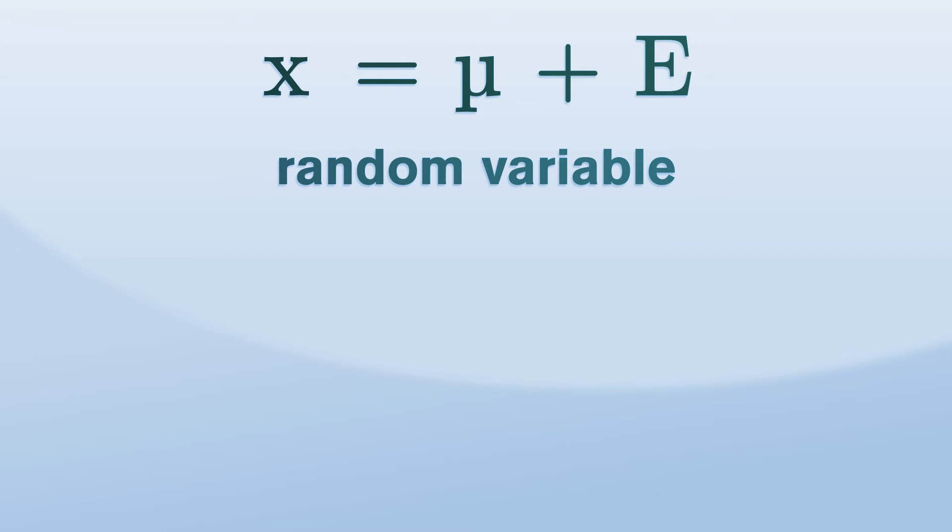x equals mu plus e, where mu is a constant and e is a random disturbance.